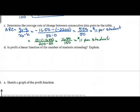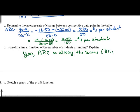Is profit a linear function of the number of students attending? Yes — it's true because the average rate of change is always the same: $11 per student.